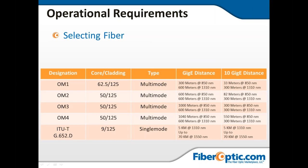As you go from OM1 to OM3 to OM4, you increase the amount of data you can transmit over a given distance. The chart shows the 1 Gig distance and 10 Gig distance — your distance limitation for transmitting that data. Then you come to single-mode fiber, which is 9/125 — a 9 micron core surrounded by 125 micron cladding — used for longer-range distances. Generally, multimode is used in buildings and small networks, while single-mode is used for long distances.